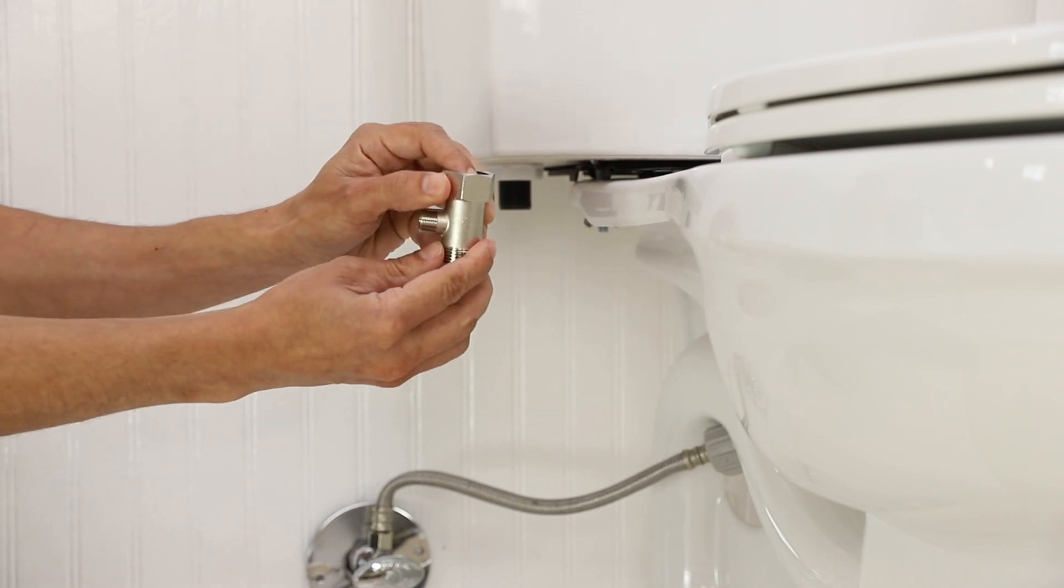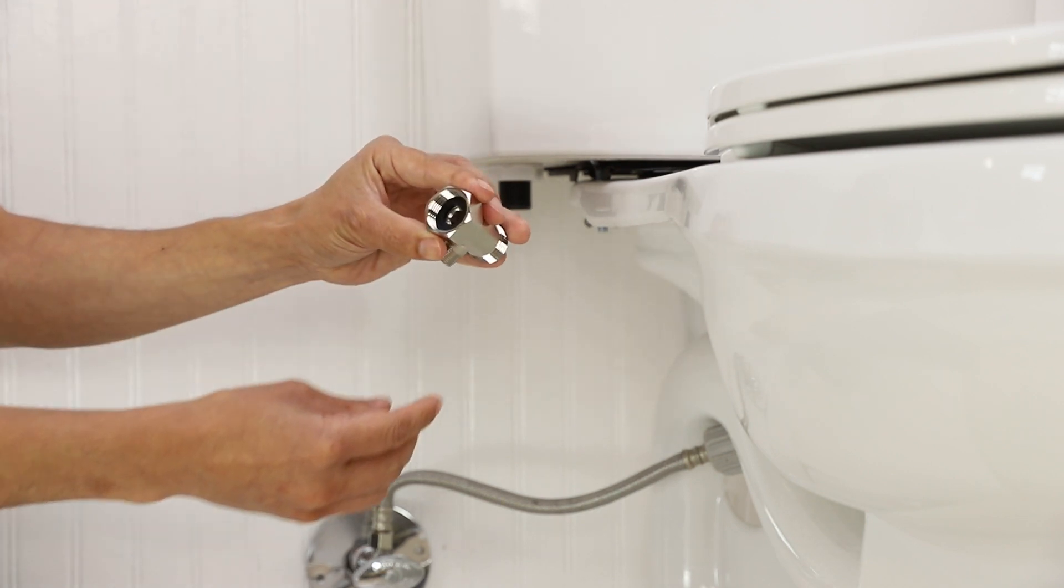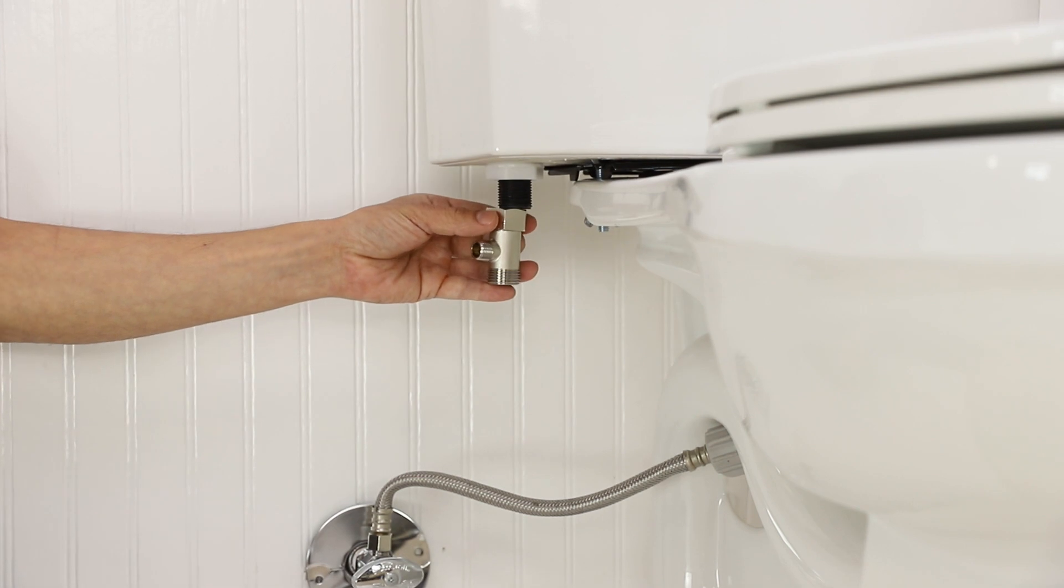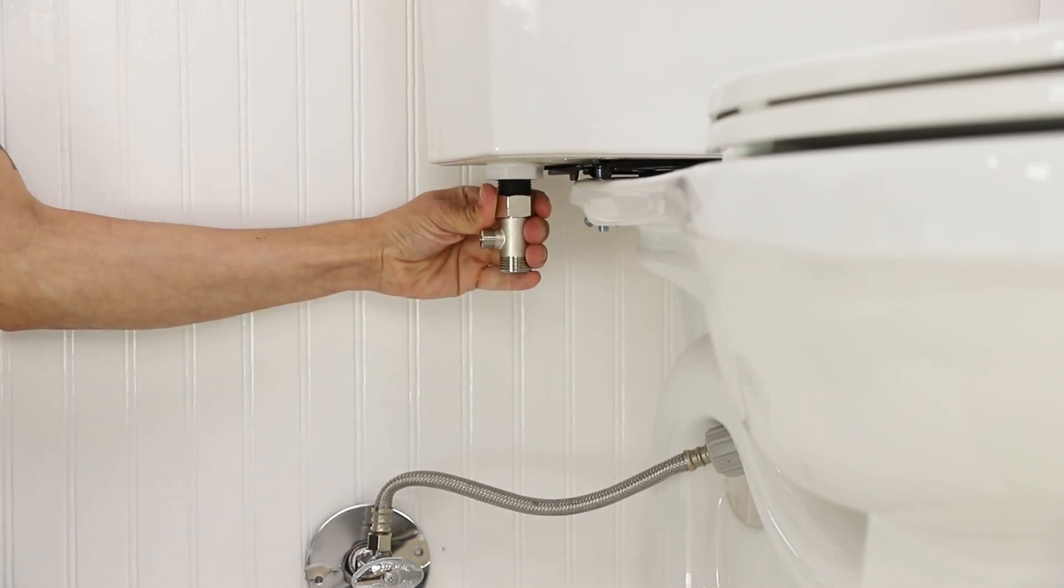Insert the black rubber washer into the provided T-valve and connect the T-valve to the fill valve under the toilet tank. Do not over tighten.